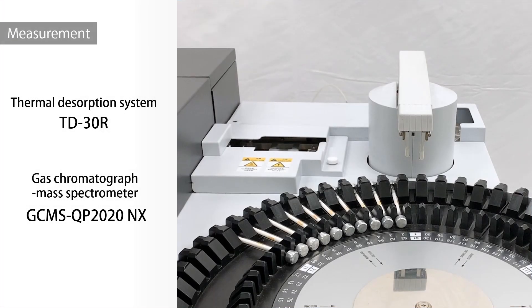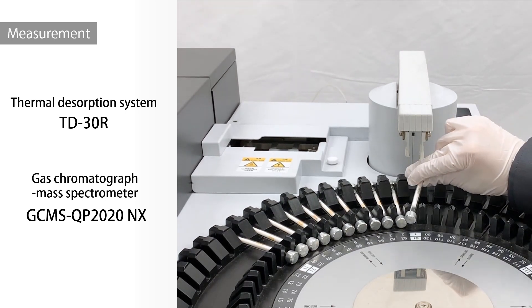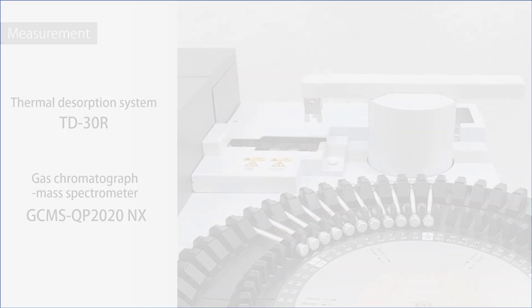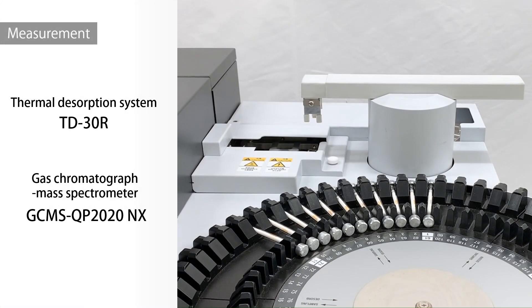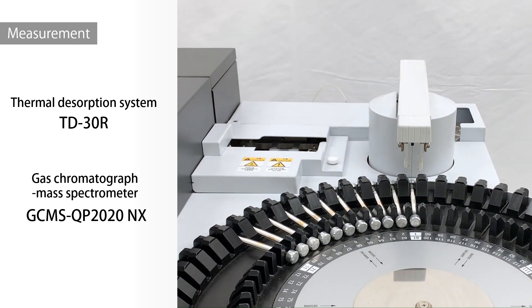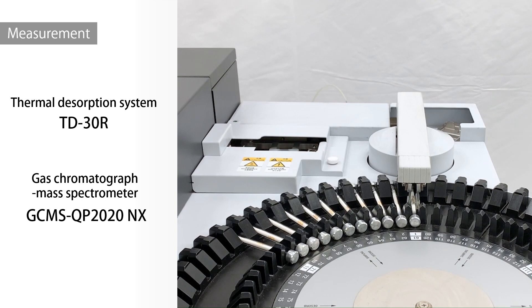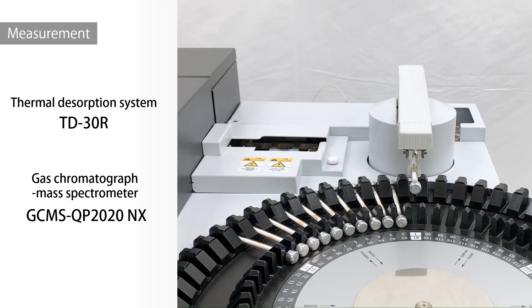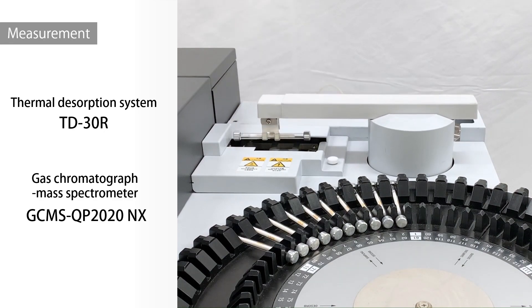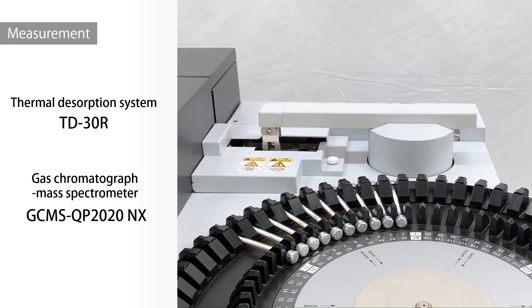First, a calibration curve was prepared with a toluene standard solution. The sample tube was set in the instrument. The auto-sampler is controlled by the software. Analysis started automatically when the auto-sampler placed the collecting tube in the heater. Once heated, the components adsorbed on the collecting tube were desorbed and introduced into GC-MS.